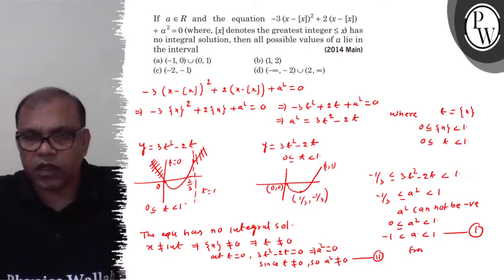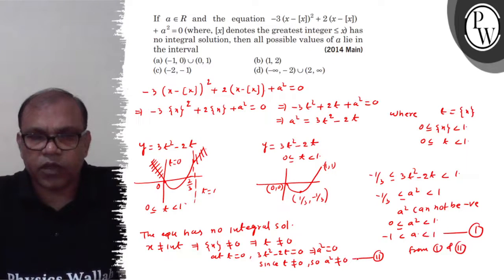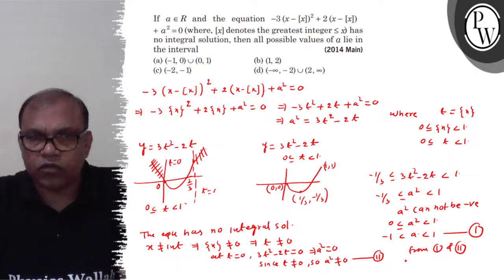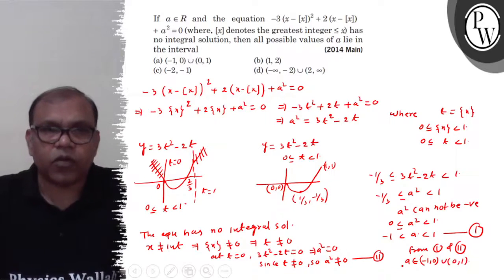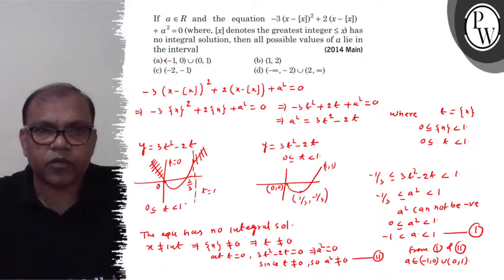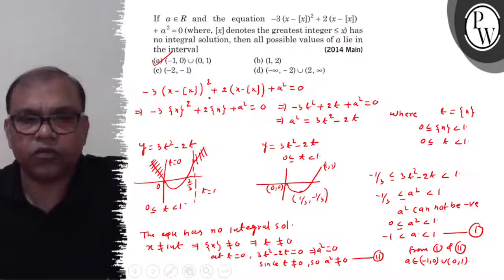अब from condition 1 and 2: a की value minus 1 से 1 के बीच में है, और इसमें से a की value 0 को discard कर दो। तो a की जो value आजाएगी: a belongs to (minus 1, 0) union (0, 1). और आपका correct option is option A. I hope you understood well, thank you.